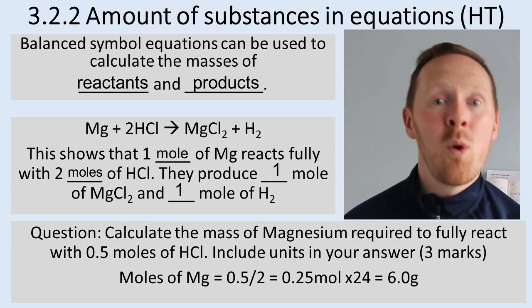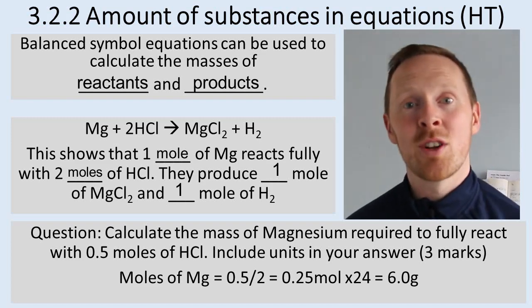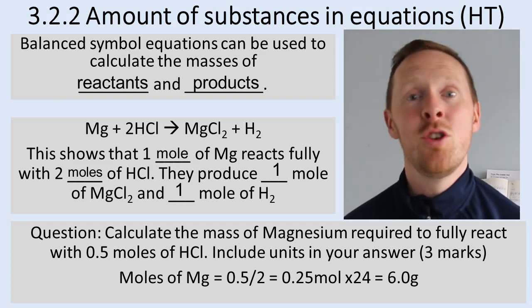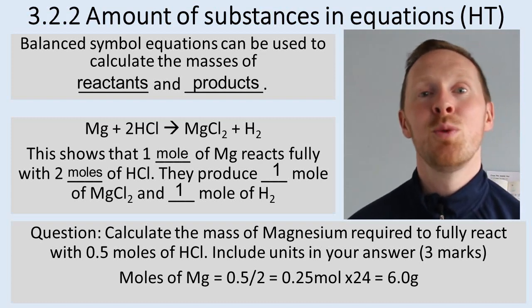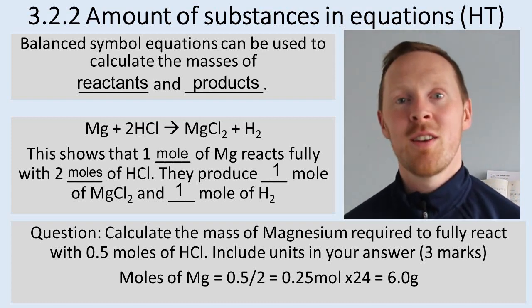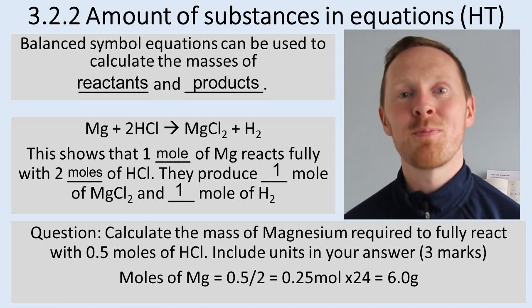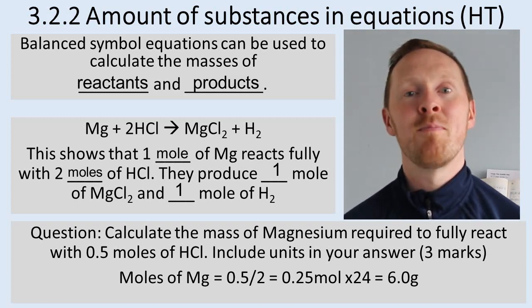Well you need 1 of magnesium to 2 hydrochloric acid. So you're going to need 0.25 moles of magnesium to 0.5 moles of hydrochloric acid. First mark there, you've identified you need 0.25 moles of magnesium.